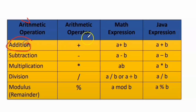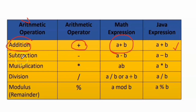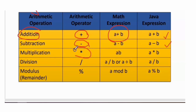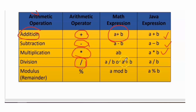Looking at the arithmetic operations table: for addition, the math expression is A + B and the Java expression is also A + B. For subtraction, use the minus operator: A - B. For multiplication, the math expression is A·B and the Java expression uses the asterisk: A * B. For division, use the slash symbol: A / B. For modulus, use the percentage symbol: A % B.